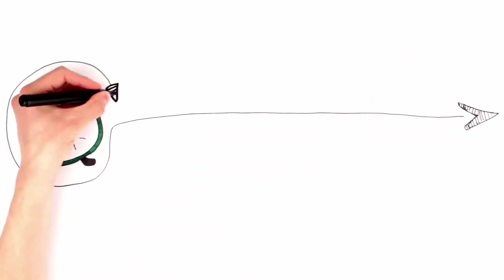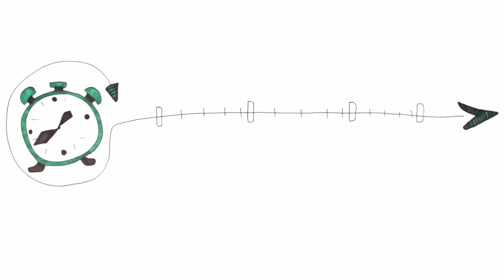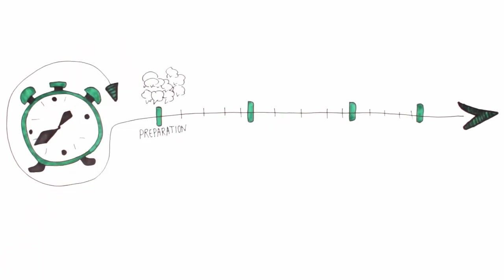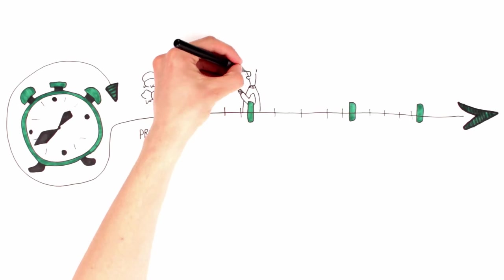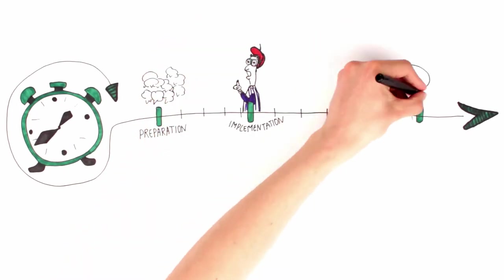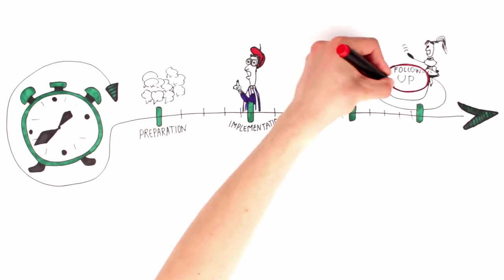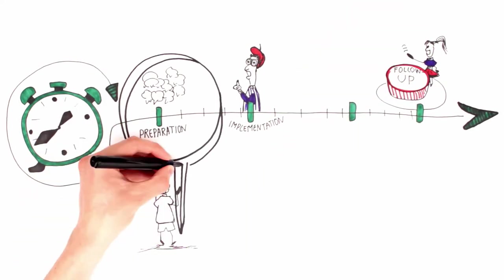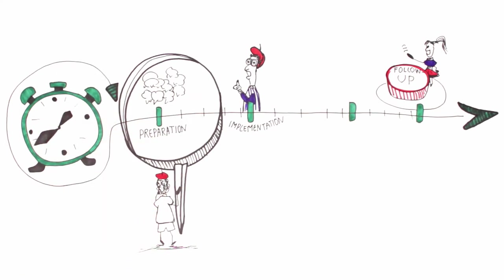Preparation, implementation, and follow-up of the mobility project should be logically linked to each other. The budget should be clearly linked to the duration, size of the group, and distances traveled. Let's look closer at the quality of preparation—it's the period before the actual mobility starts, but is already part of the entire project and should be well planned and implemented.